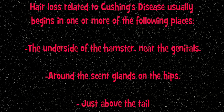Hair loss related to Cushing's disease usually begins in one or more of the following places: the underside of the hamster near the genitals, around the scent glands on the hips, or just above the tail.